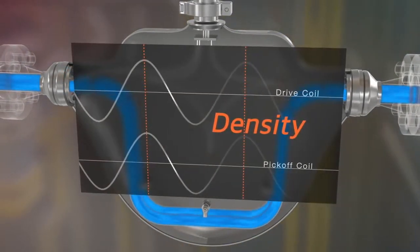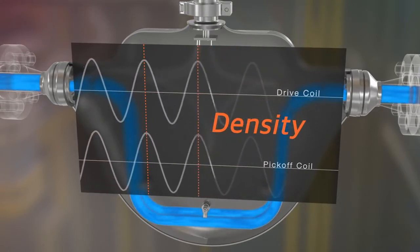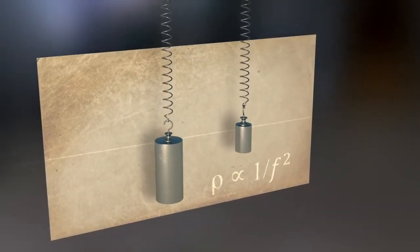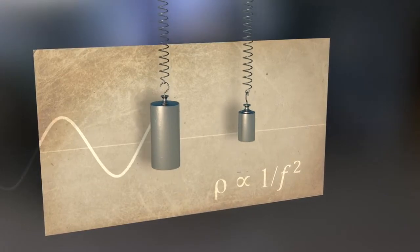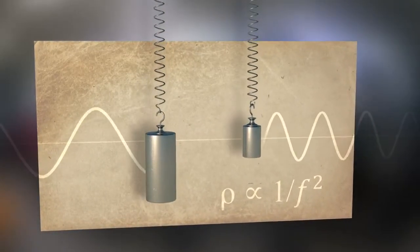When the liquid density changes, the vibrating frequency of the tubes also changes. Similar to a spring and mass system oscillating at its natural frequency, a larger mass oscillates at a lower frequency, while a smaller mass oscillates at a higher frequency.